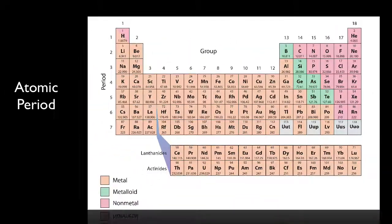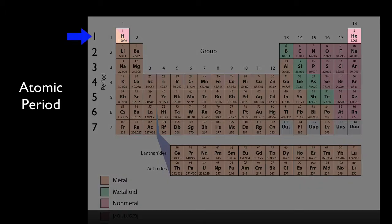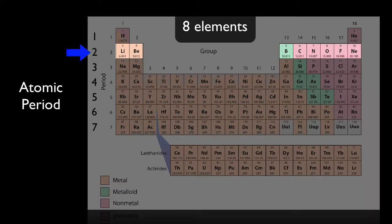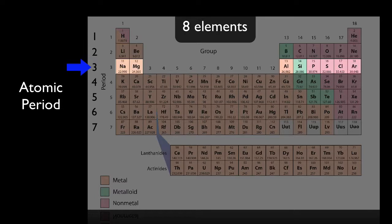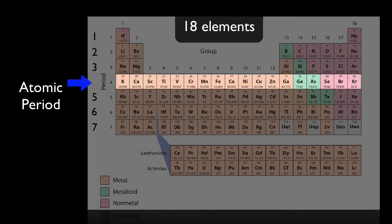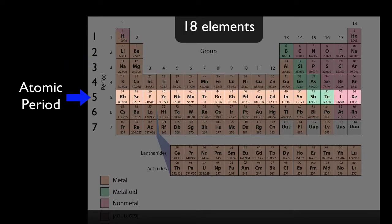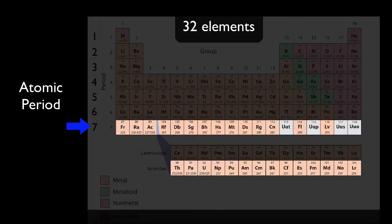There are seven periods. Notice the first period only has two elements, hydrogen and helium. The second period has eight elements, lithium through neon. There are also eight elements in the third period. The fourth and fifth periods each have 18 elements, while the sixth and seventh periods each have 32.